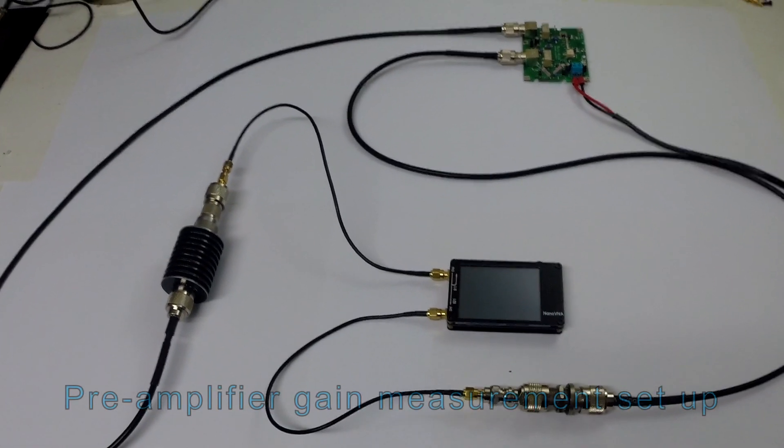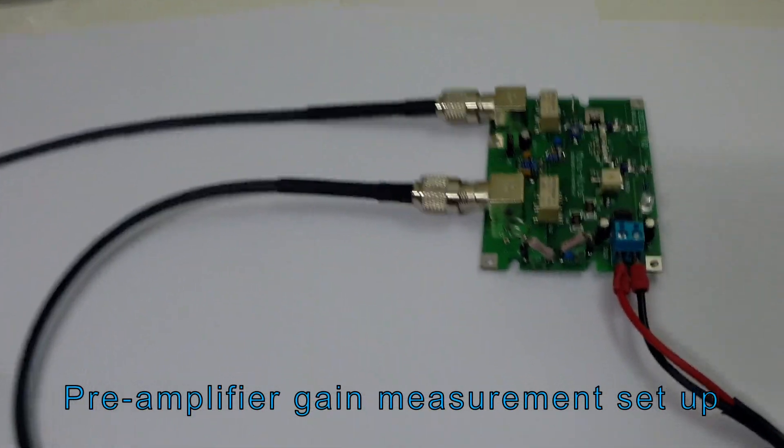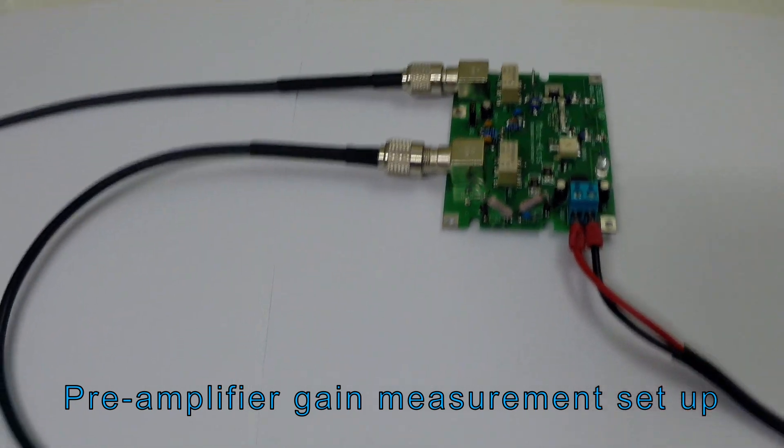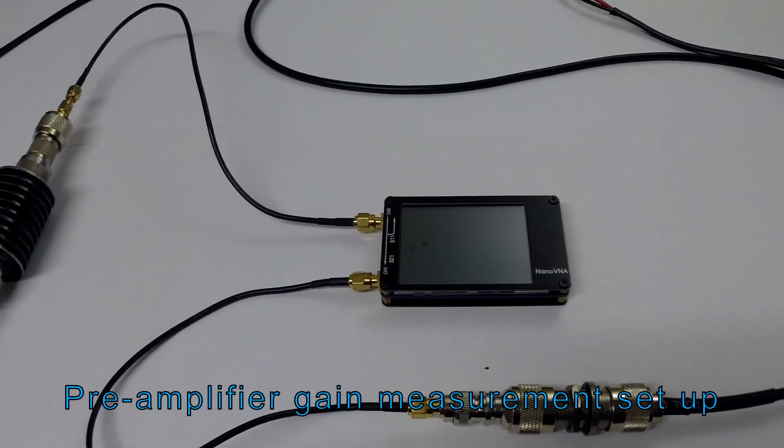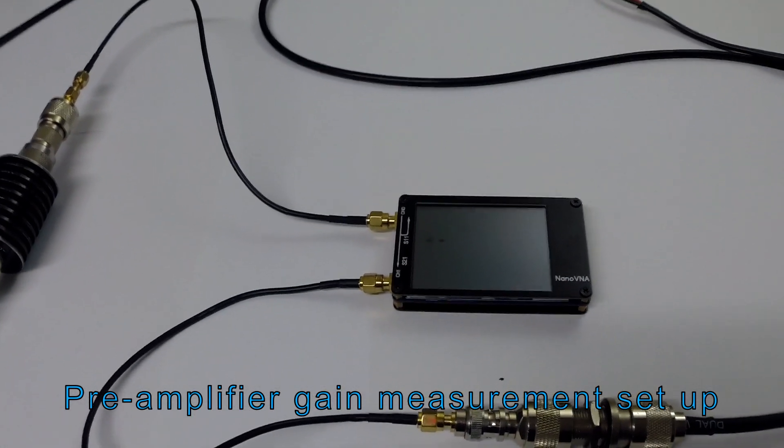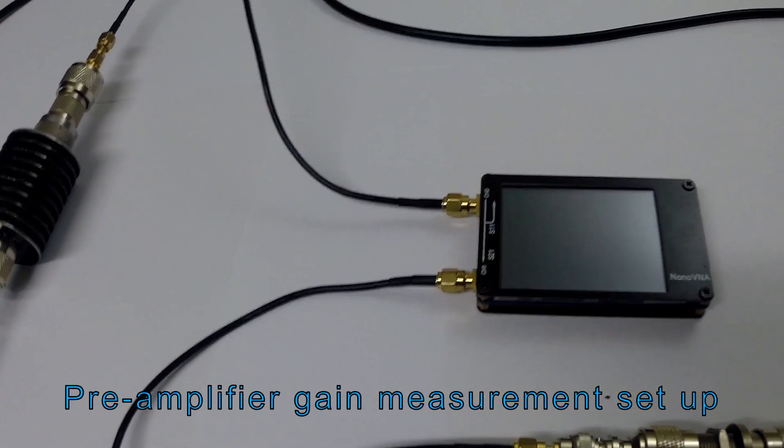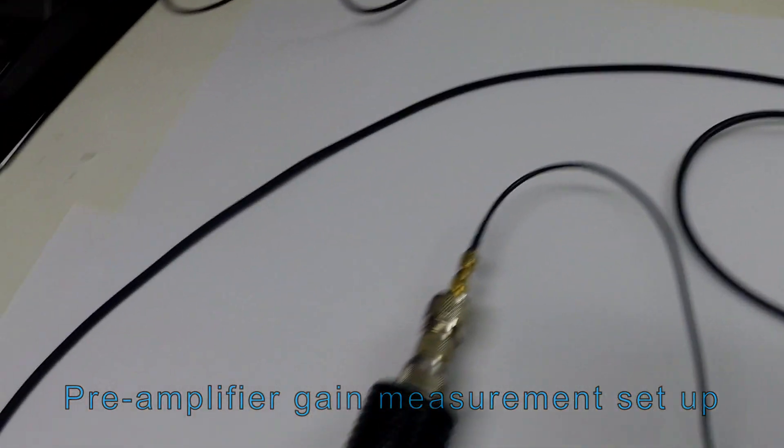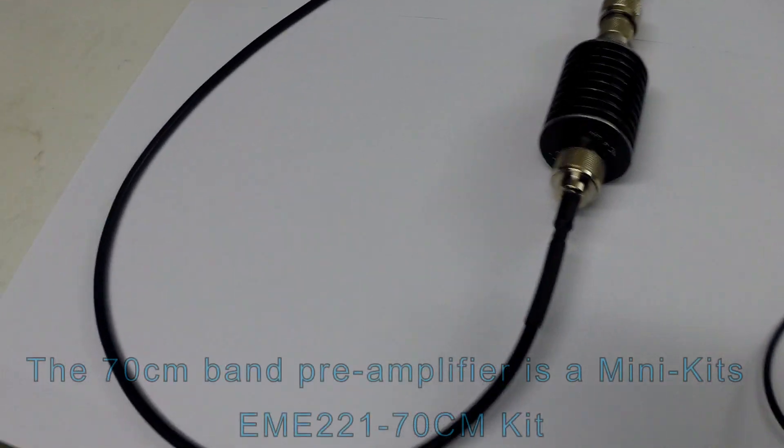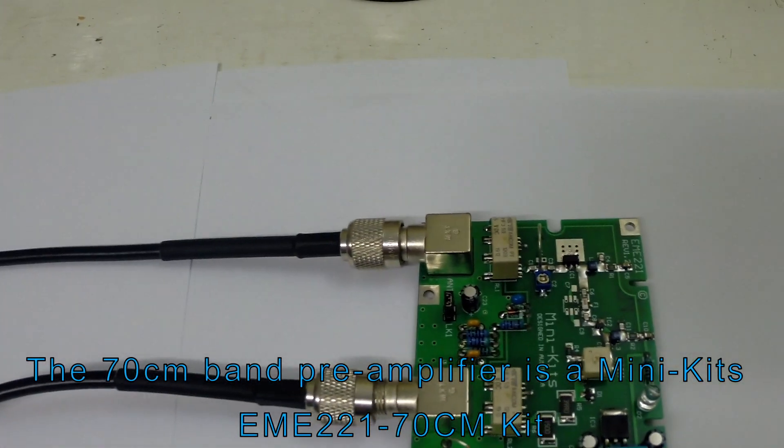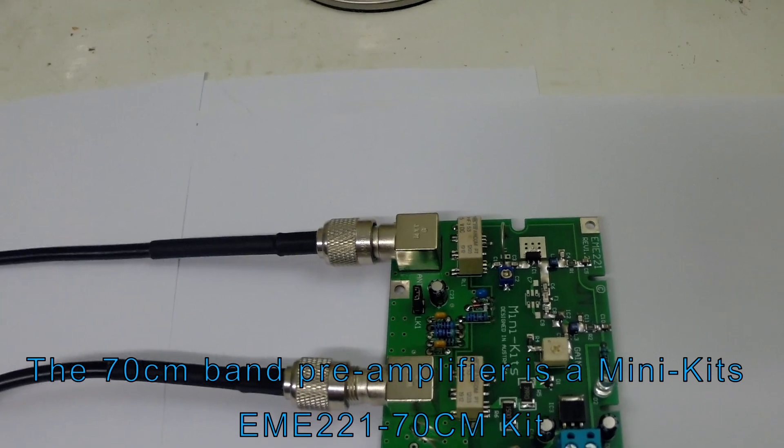This is the test rig to evaluate the 70 centimeter band preamp, so we're using a nano VNA. The channel 0 port will eject a signal via this 20 dB attenuator into the antenna port on the preamp.